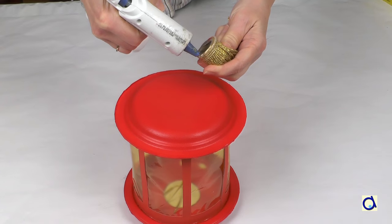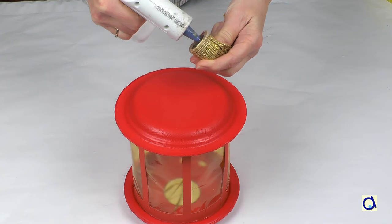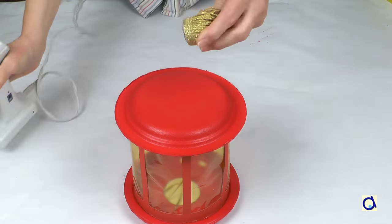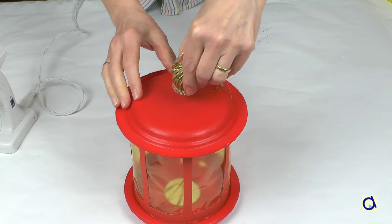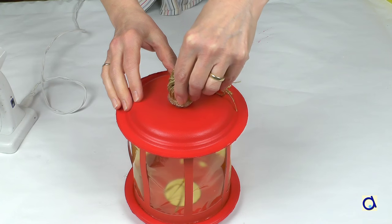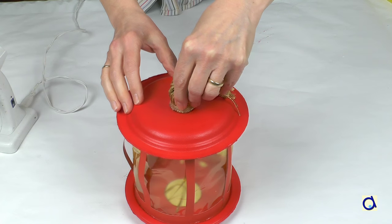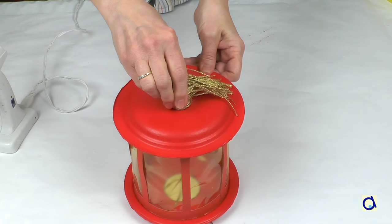When the glue is dry, you can glue a gold tassel to the bottom of the lantern. In my case, I simply glued the fringe ribbon around a small piece of cardboard tube and I attached that to the lantern.